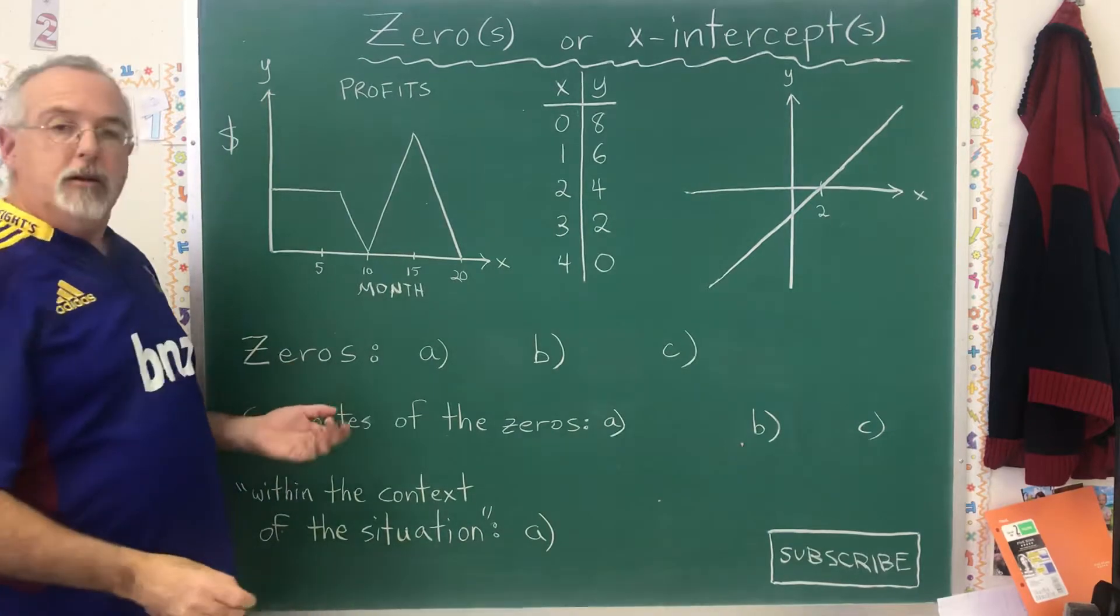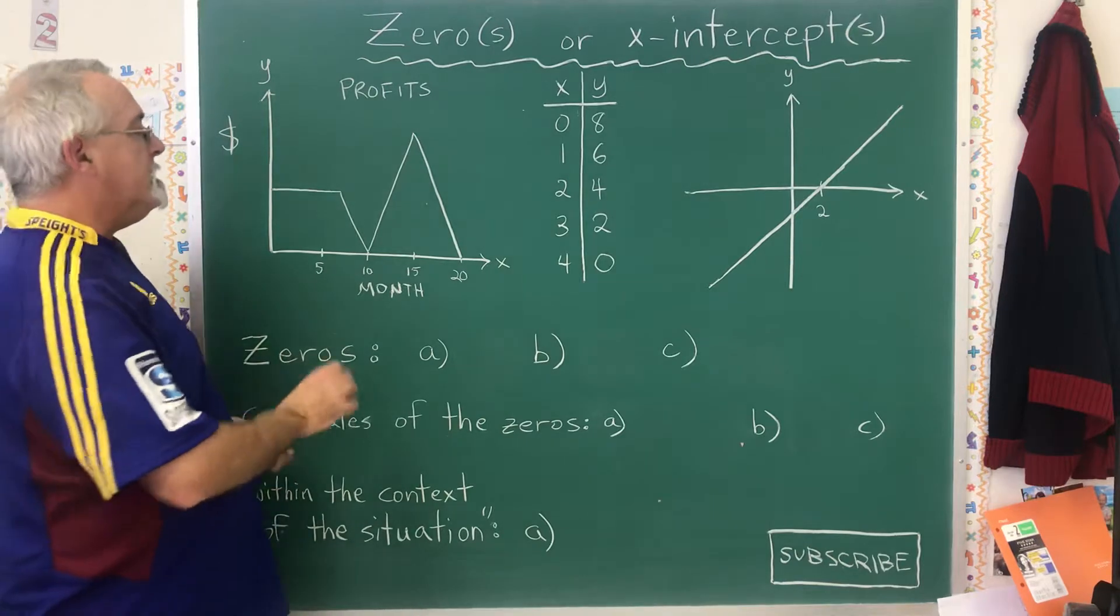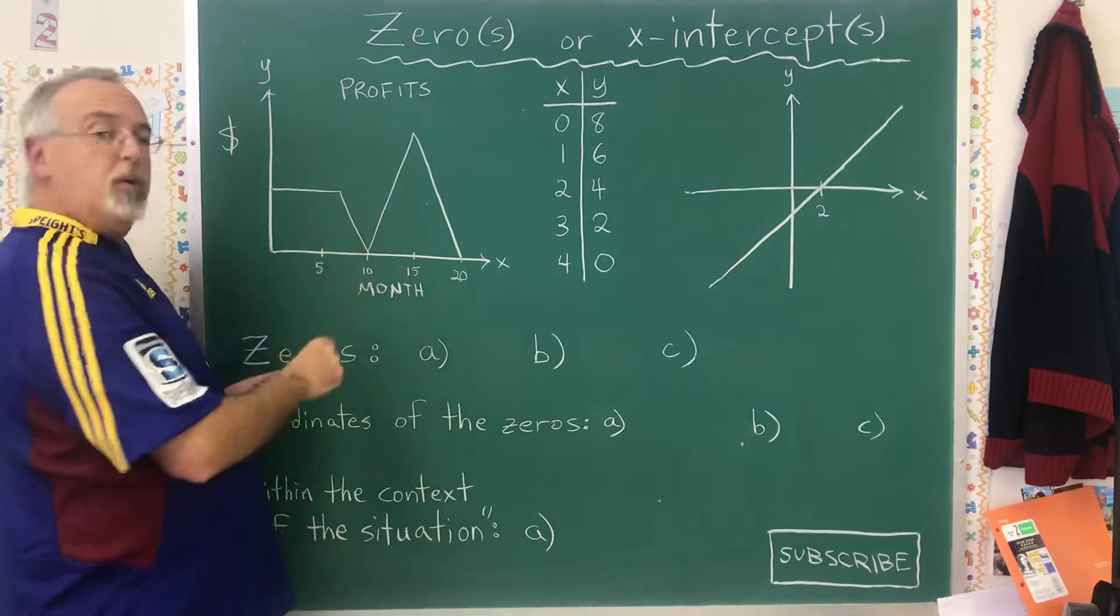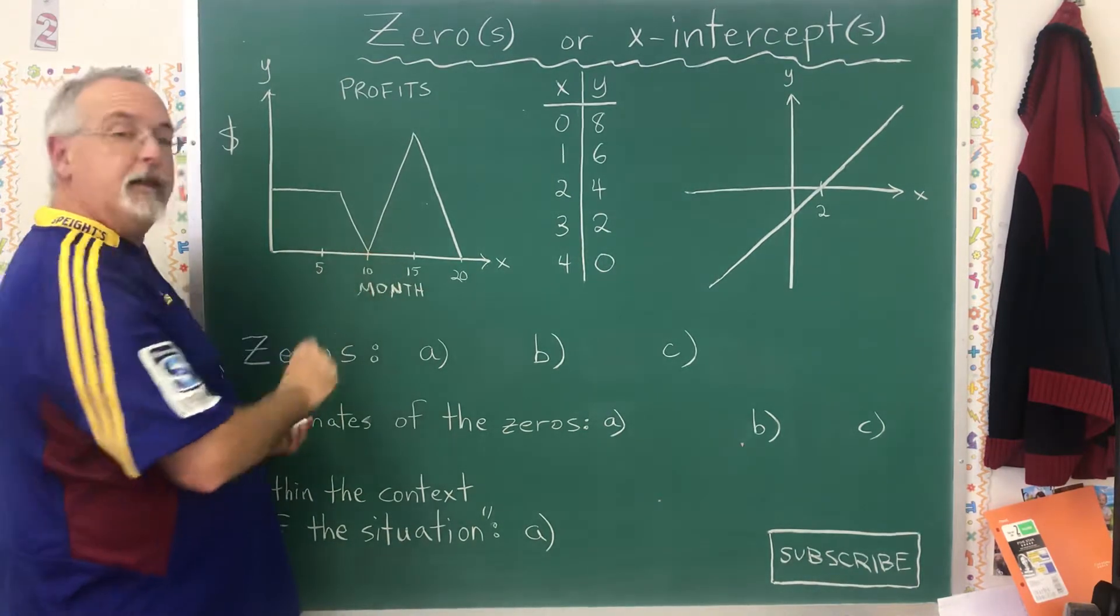When I'm asked for the zeros, or when I'm asked for the x-intercepts, it means the same thing. I'm asked for the points where the y-coordinate would be zero, the points where the curve intercepts the x-axis.